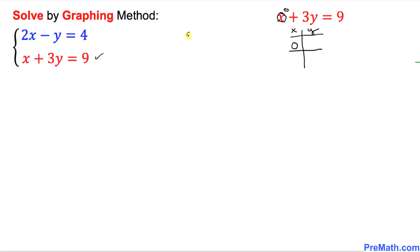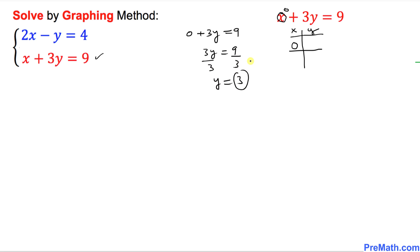If x equals 0, replace x with 0 and simplify: 0 plus 3y equals 9, so 3y equals 9. Divide both sides by 3 and y turns out to be 3. So if x is 0, y is 3.